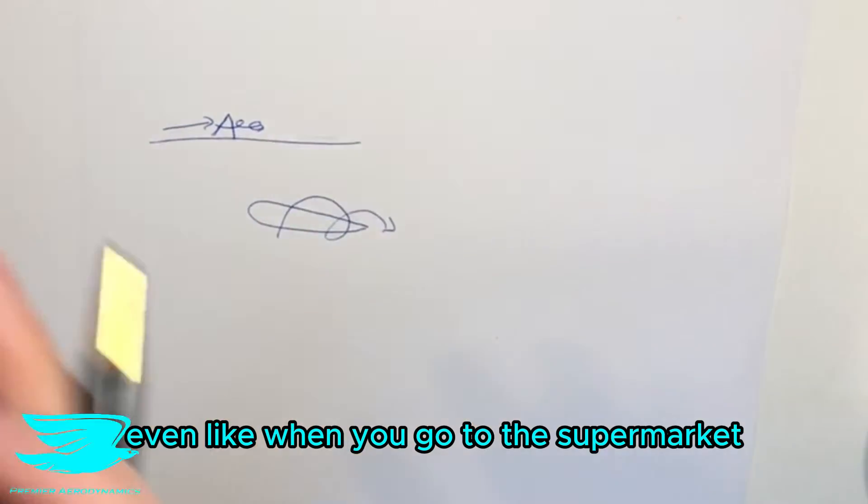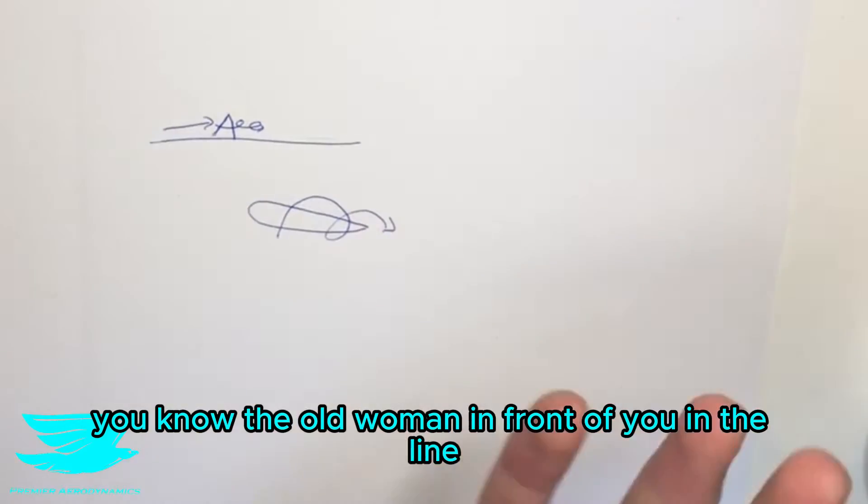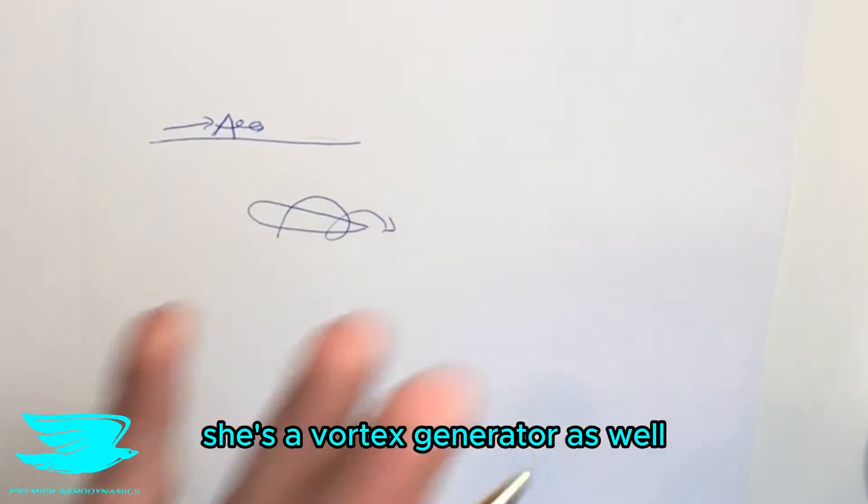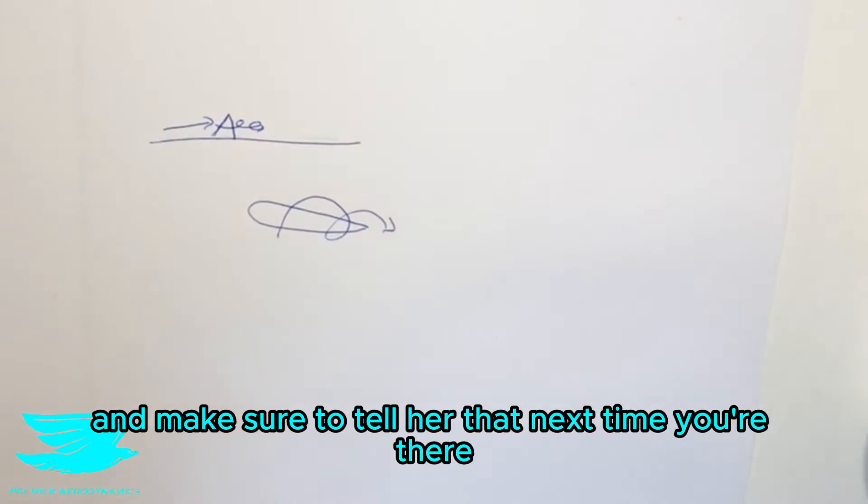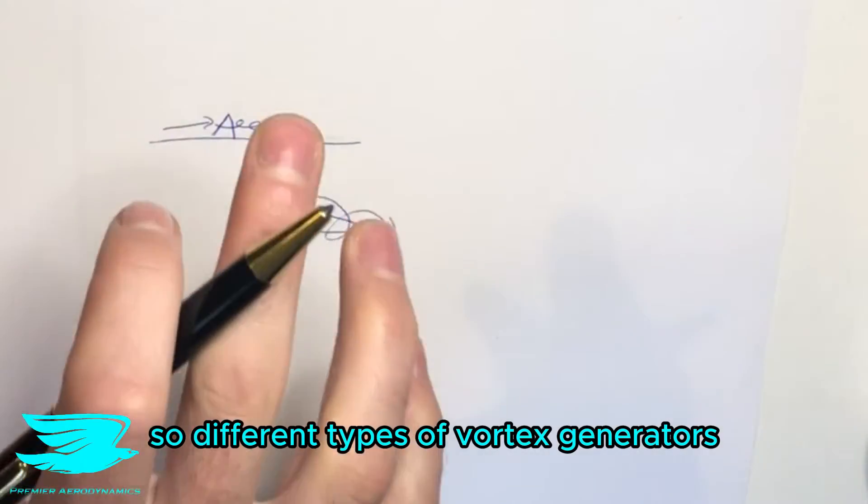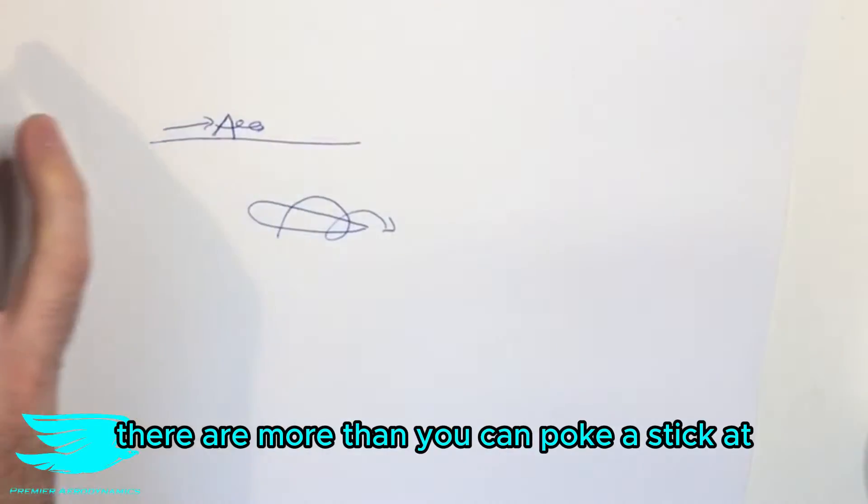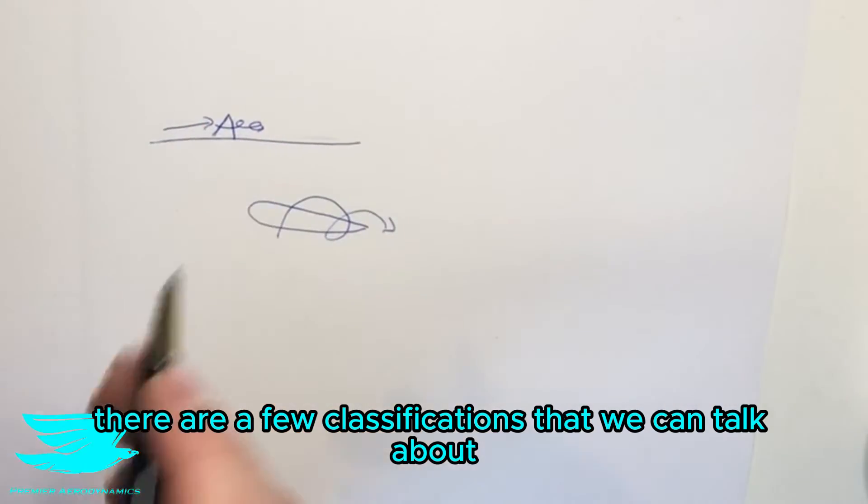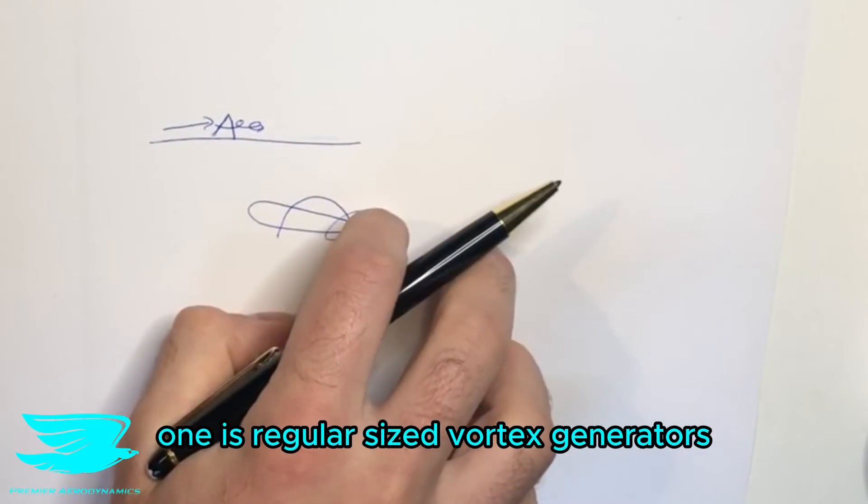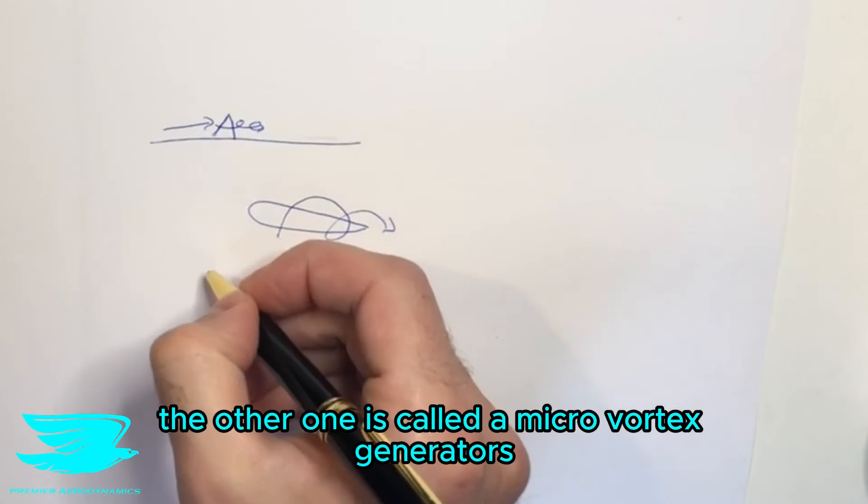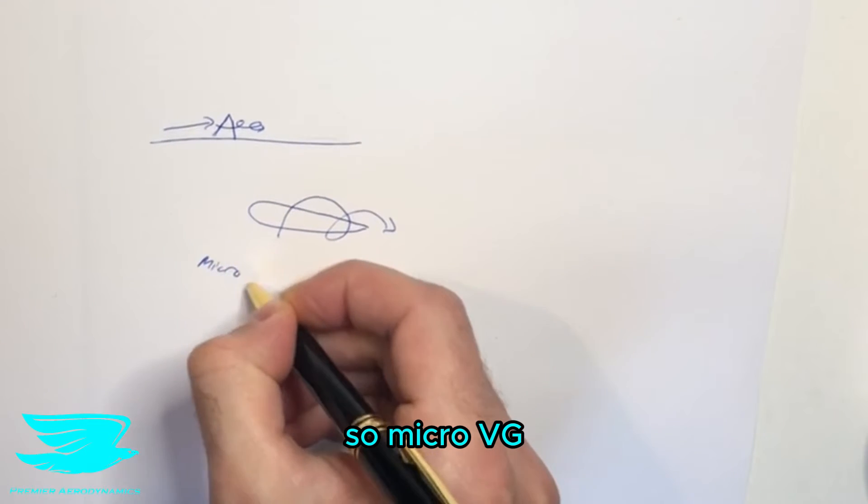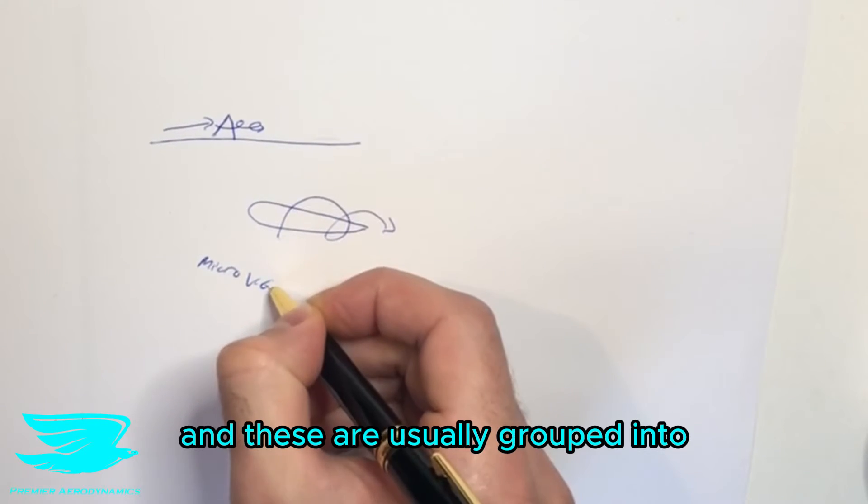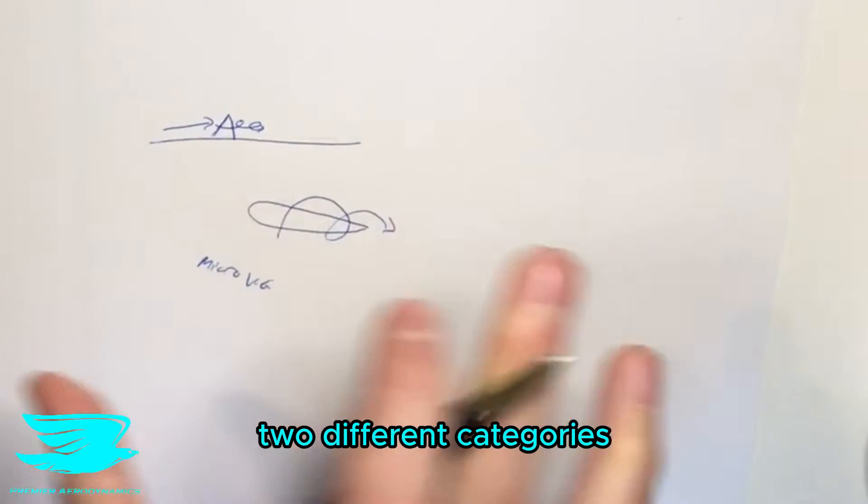And that is a vortex generator, even like when you go to the supermarket, you know, the old woman in front of you at the line, she's a vortex generator as well, and make sure to tell her that the next time you're there. So let's move on. So different types of vortex generators. As I mentioned, there are more than quick stickers, but there are a few classifications that we can talk about. One is regular-sized vortex generators. The other one is called a micro-vortex generator. So micro-VG.